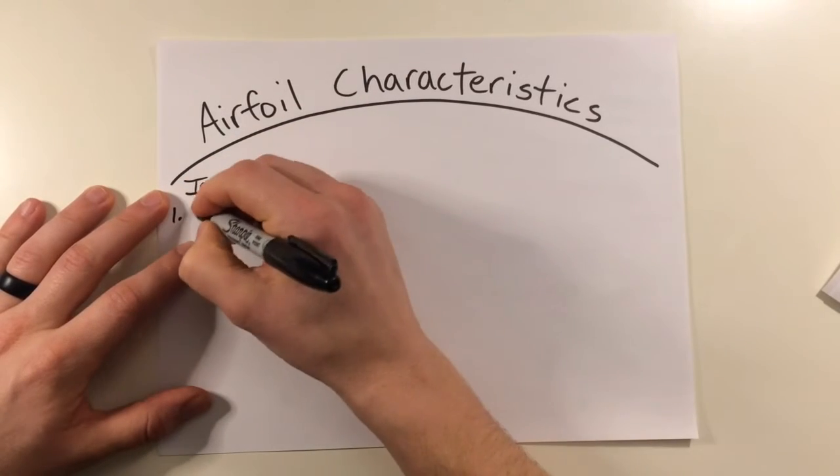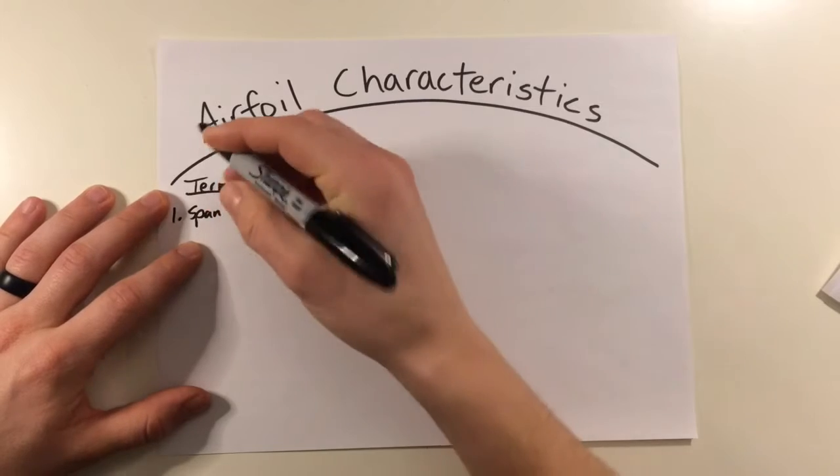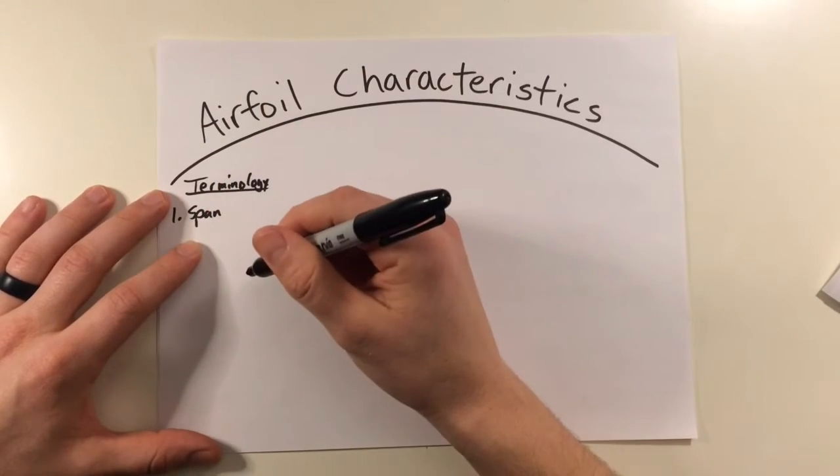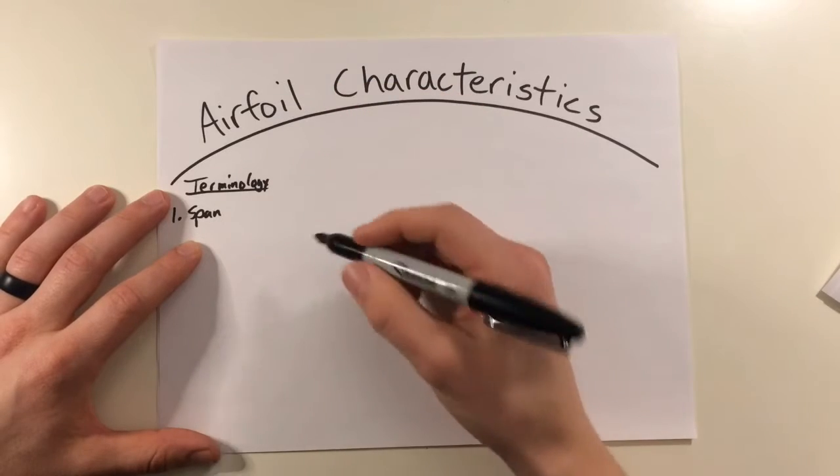First up, we just have the blade span. Blade span is the length from the point of rotation or the hub to the tip. The longer the span,